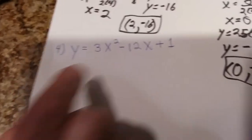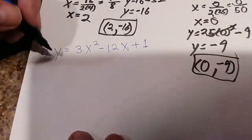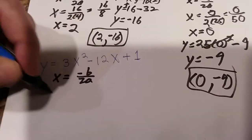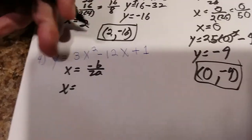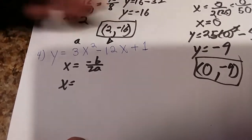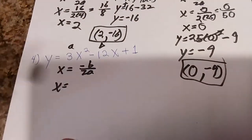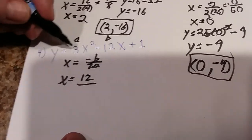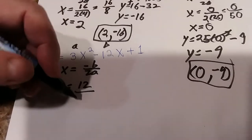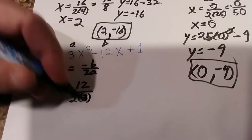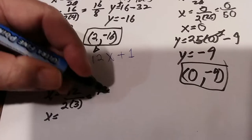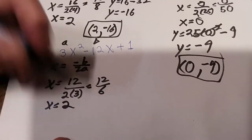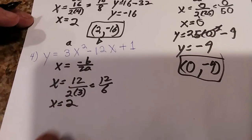One more example. Again the axis of symmetry is -b over 2a. The equation is in order — a and b are what we need, c is not used here. Negative b means change the sign of the middle number, giving us 12. The bottom is 2 times a, where a is 3, so 2 times 3 = 6. Twelve divided by 6 is 2, so the axis of symmetry is x = 2.